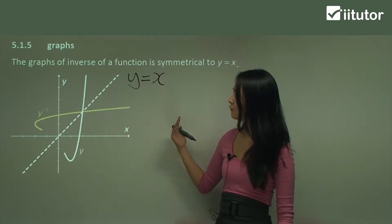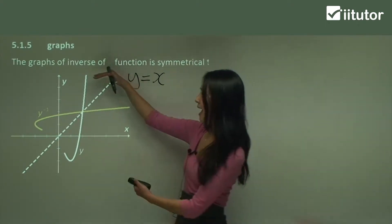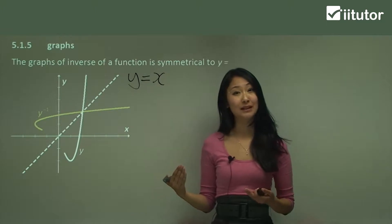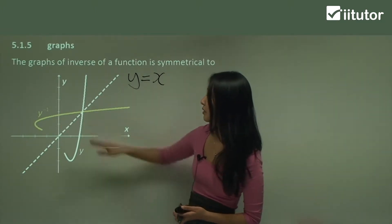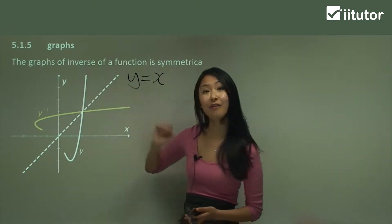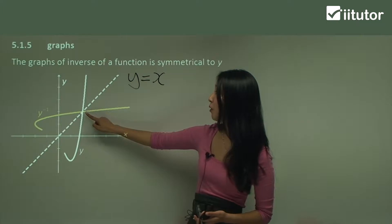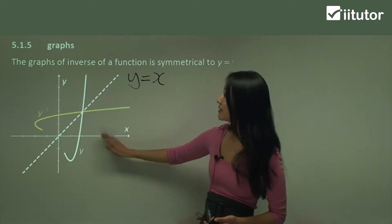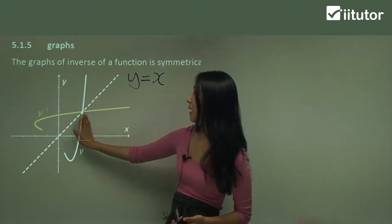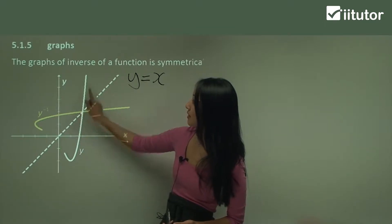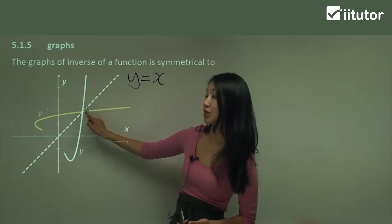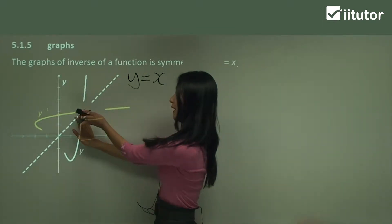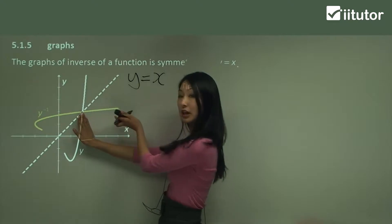Now if it confuses you how that flips over to that, what you can do is just split the graph into the top half and the bottom half — so before it crosses the dotted line and after. So let's consider the top half first. I'm just thinking about this portion here. Can you see how that's going to be reflected into your yellow line there?